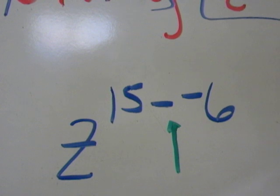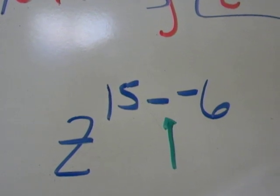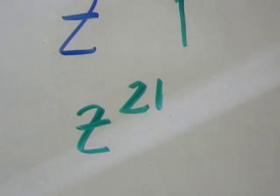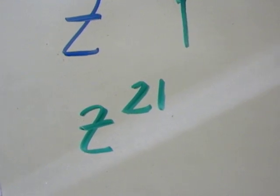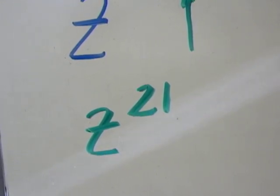When I subtract a negative, I really need to add. So it's going to be z to the 21st. And because it's positive, it will remain in the numerator.